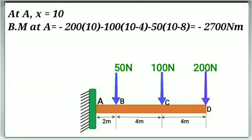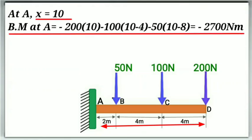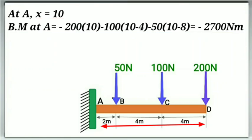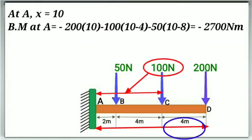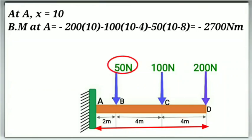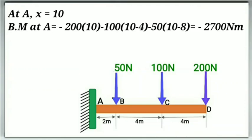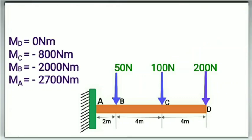At point A, X will be 10. So on substituting the value of X in this equation we will get the bending moment at point A, which will be equal to minus 200 into 10 minus 100 into (10 minus 4) minus 50 into (10 minus 8), giving us a total of minus 2700 Nm. So we got these values of bending moment at different points for drawing the bending moment diagram.